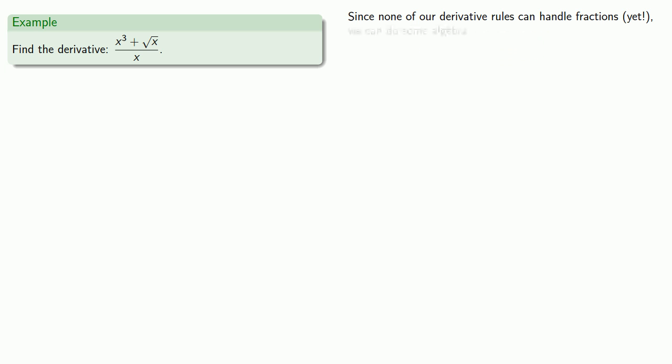We could always fall back and do a little bit of algebra. This quotient can be rewritten as x cubed over x plus square root of x over x. And we'll do a little bit of algebraic simplification and cleanup.